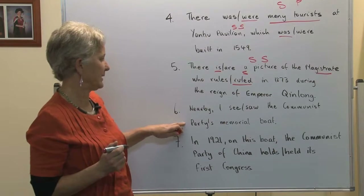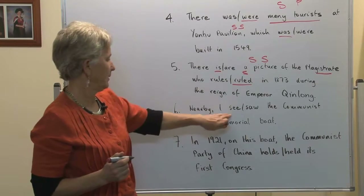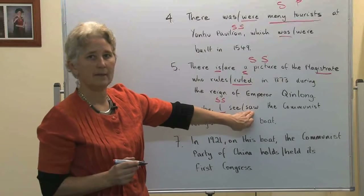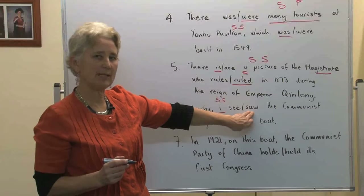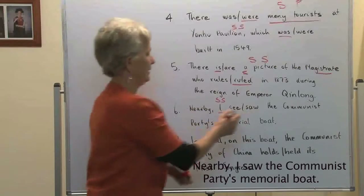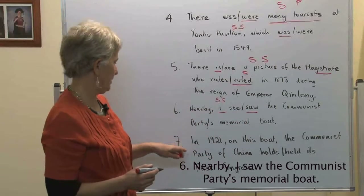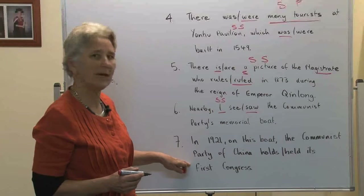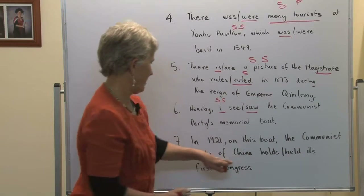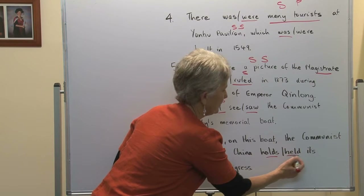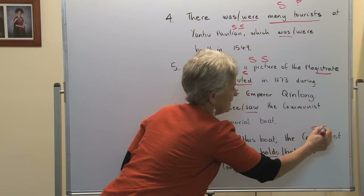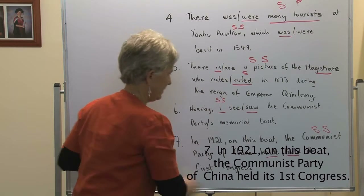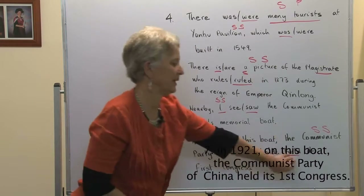Number six: nearby I saw the Communist Party's memorial boat. I is the grammatical subject — it is singular — and we need a past tense verb because Pearl is talking about something she saw when she was there. 'Saw' is an irregular past tense verb. Number seven: in 1921, on this boat, the Communist Party of China held its first congress. The Communist Party is the singular subject, and it's in the past tense because we're talking about something that has already happened — it held its first congress.